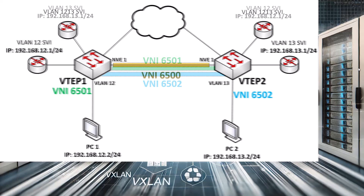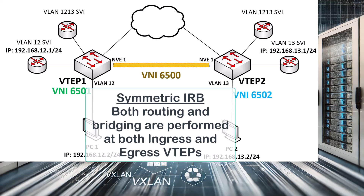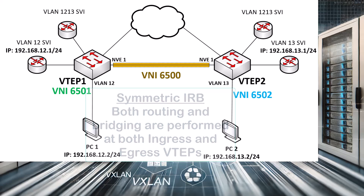The alternative is symmetric IRB. Believe it or not, we've already seen this in previous videos, but we haven't actually called it symmetric IRB. In symmetric IRB, routing and bridging takes place at both the ingress and the egress VTEPs. In order to achieve this, it makes use of the transit VNI that we have mentioned before.